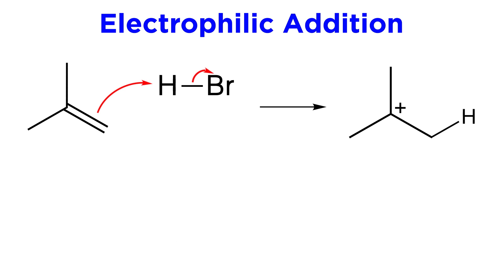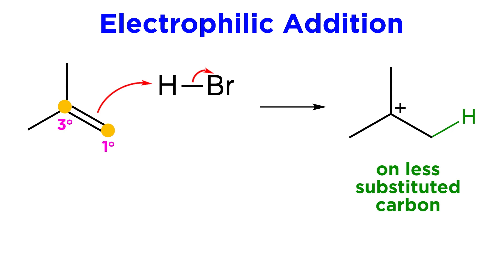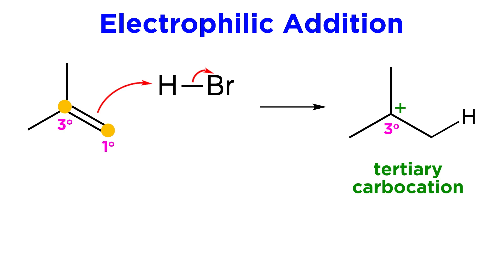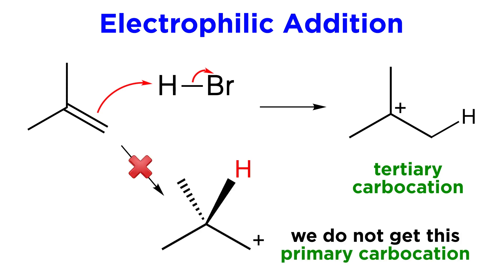Now, let's revisit the mechanism for an addition reaction to contextualize carbocation stability. Recall that in the first step of a hydrohalogenation, a new C-H bond was produced, leaving us with a carbocation. It was the case that the new hydrogen ended up exclusively on the less substituted carbon, leaving us with this specific carbocation, which we can call a tertiary carbocation. We did not see the reverse situation, where the hydrogen ended up on the more substituted carbon, which would leave us with a primary carbocation, since that carbon would be bonded to only one other carbon.